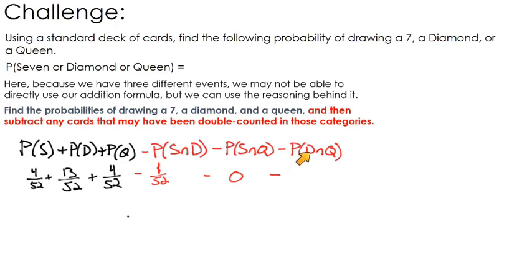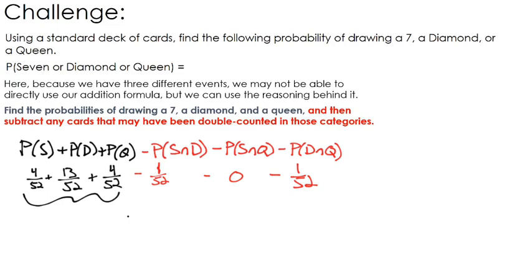Lastly, are there any cards that are both diamonds and queens? Yes — the queen of diamonds. You have the queen of diamonds in the diamond category and in the queen category, so we subtract that one card back out as well. If I combine all of these, that's 21 cards, or 21 over 52.